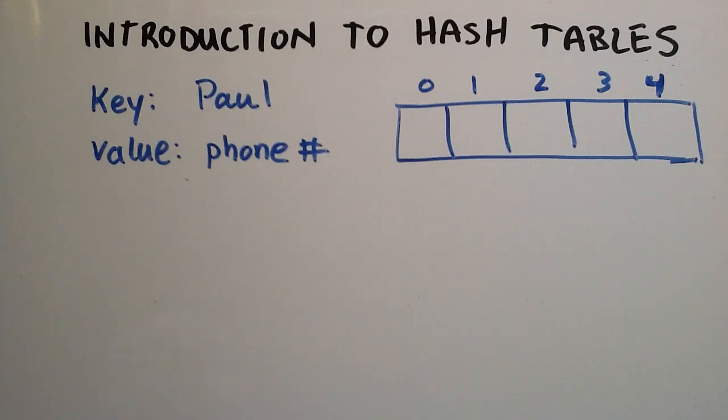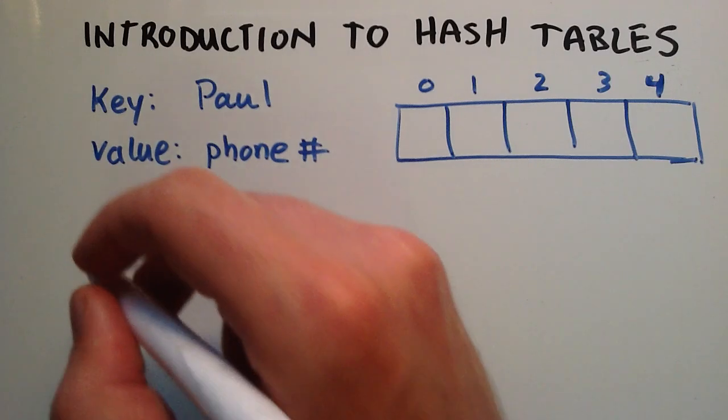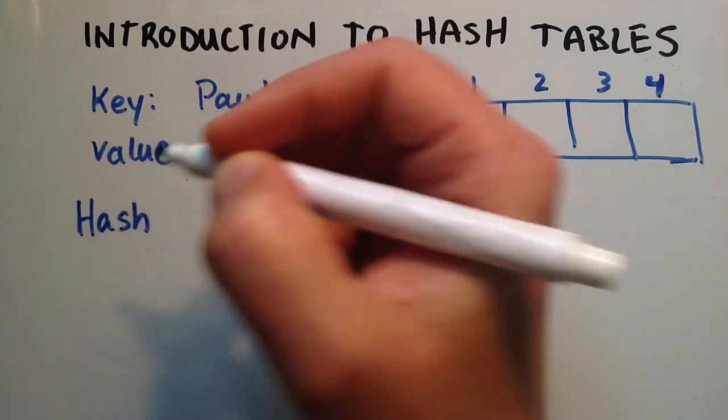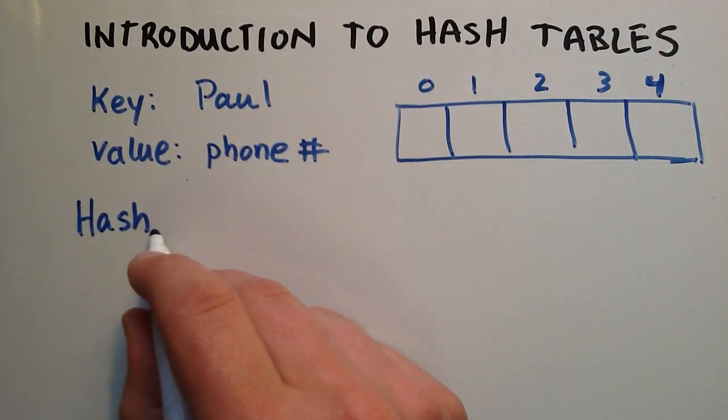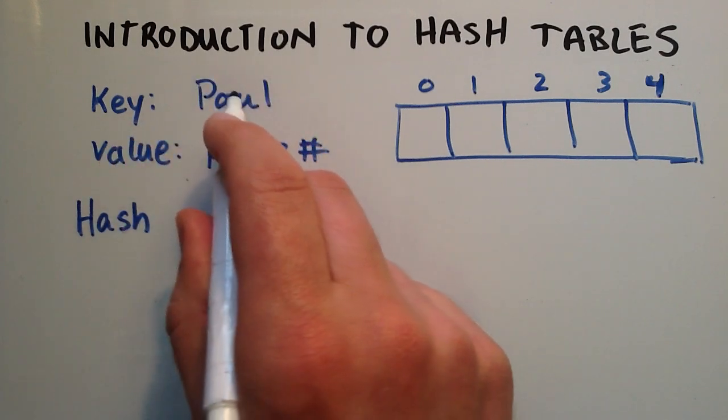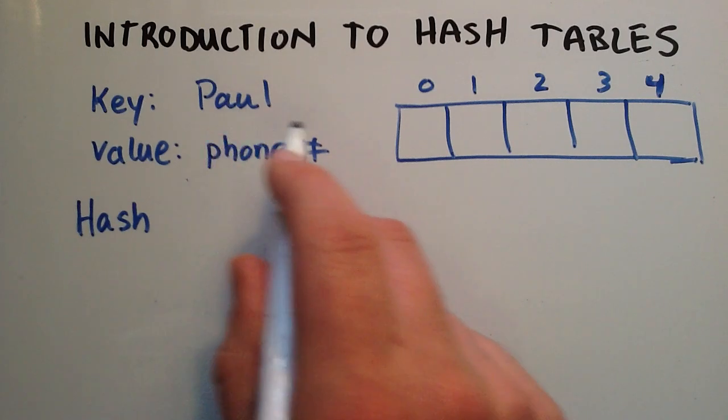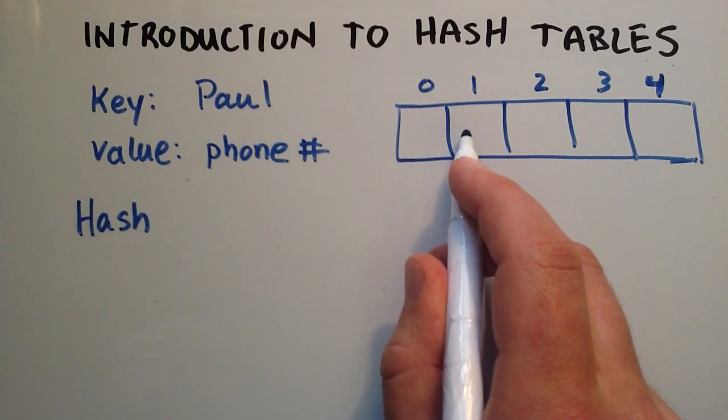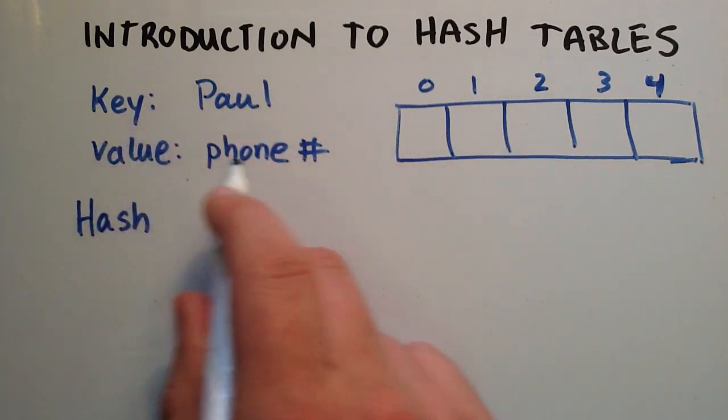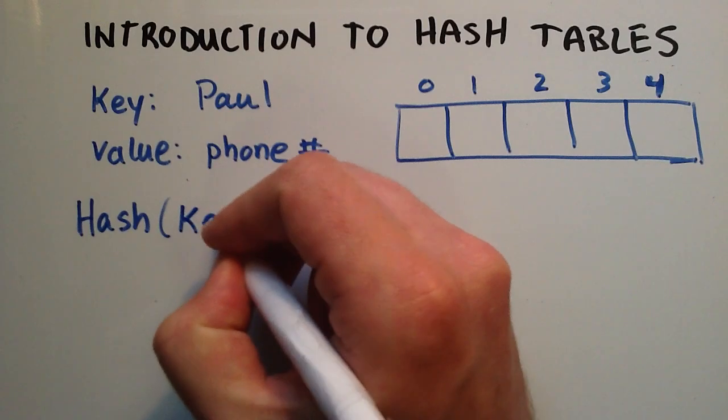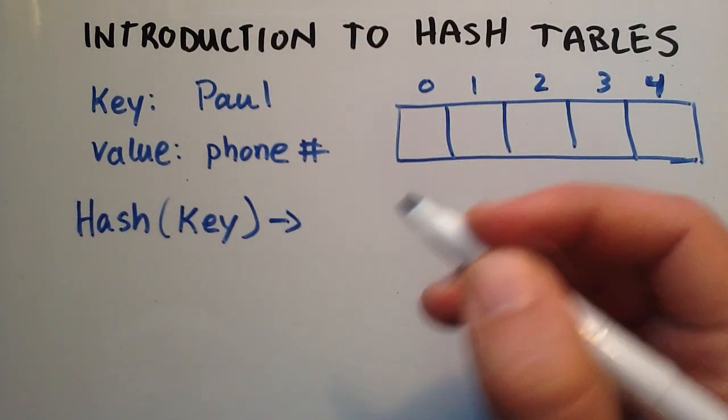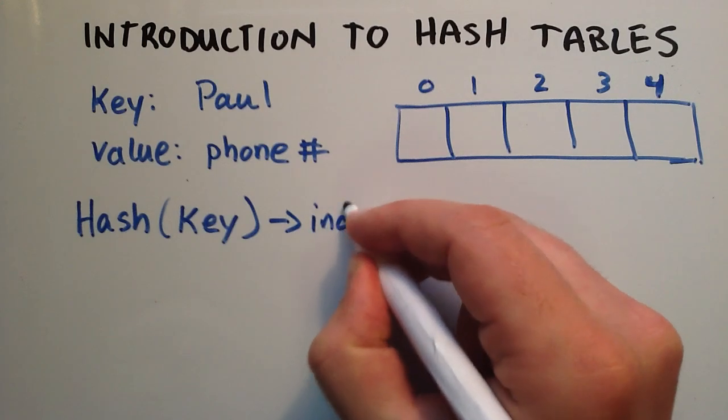So the way this works is we're basically going to write a hash function. What the hash function is going to do is it's going to look at a certain key, and then it's going to evaluate that key and spit out some sort of index number, and it's going to tell us what location in the array to store this information. So for example, our hash function is going to take a key value, and as a result, it's going to give us an index number.